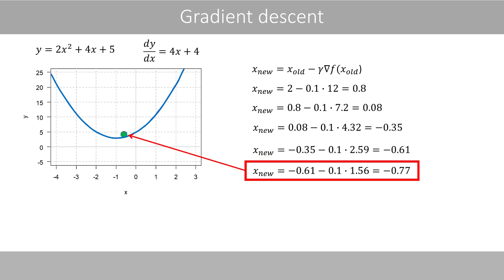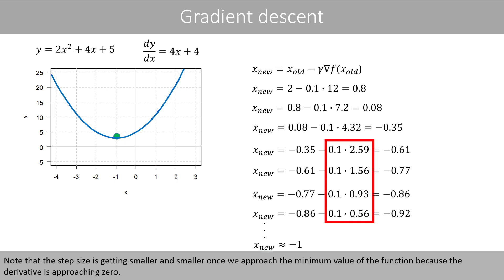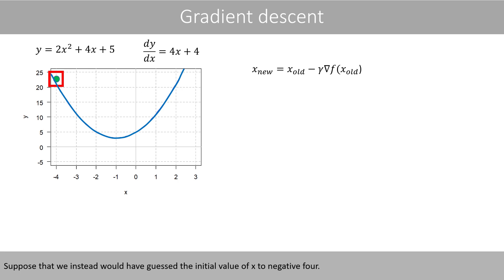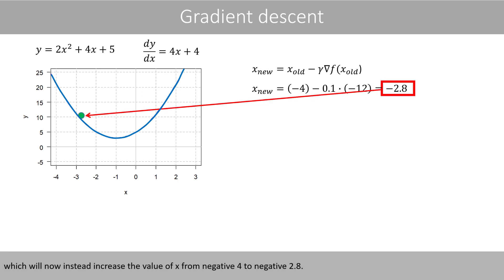We continue like this. If we continue to iterate many times, the x value will be approximately equal to negative 1. Note that the step size is getting smaller and smaller once we approach the minimum value of the function, because the derivative is approaching 0. Now, suppose that we instead would have guessed the initial value of x to negative 4. Then we would do the same calculations again, with the difference that the derivative is now negative, which will instead increase the value of x from negative 4 to negative 2.8.